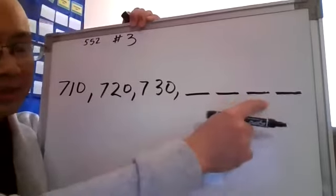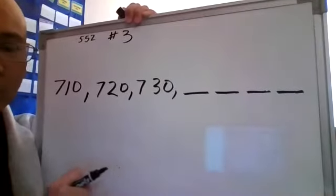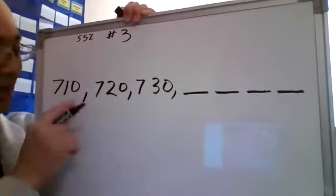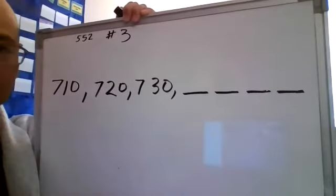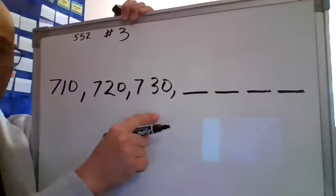Bill wants to know what the next four numbers are. What are the next four numbers in the pattern? Now, if I follow my number line, I'm going to look, and I see 710, 720, 730.